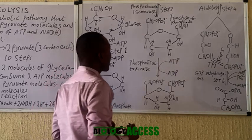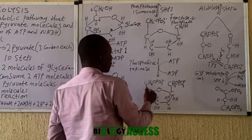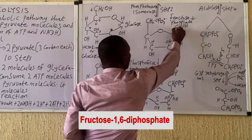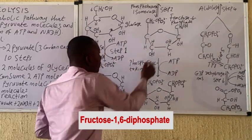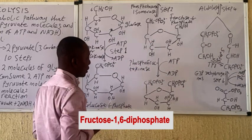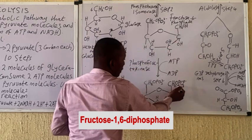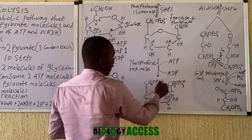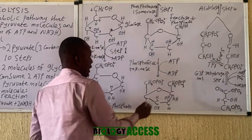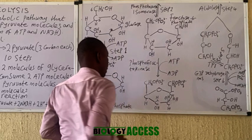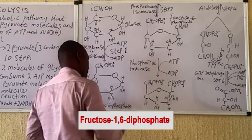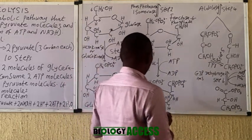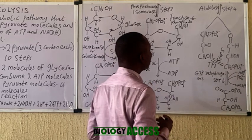In step three, fructose-6-phosphate is phosphorylated to fructose-1,6-bisphosphate. Another ATP is invested and ADP is given out, with a phosphate group replacing a hydroxyl group on the molecule. This compound is called fructose-1,6-bisphosphate.